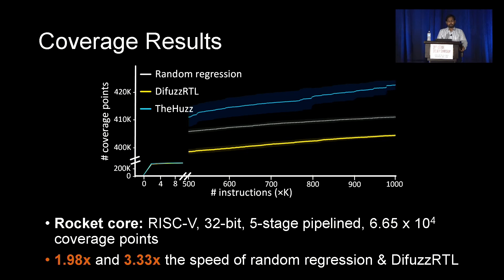As far as coverage results are concerned, DHS is able to cover more points and also faster compared to existing traditional regression techniques and the existing state-of-the-art hardware fuzzer DifuzzRTL. We also showed that the results are statistically significant in the paper.